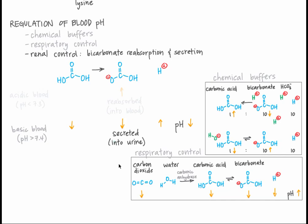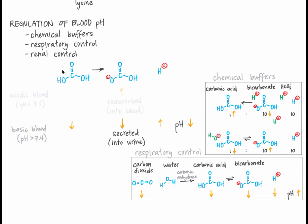As you can see, the ability of our bodies to control pH is crucial. Protein structure and function is totally dependent on pH. These three mechanisms all act to maintain pH homeostasis, and they all act on different timescales to ensure optimal physiological pH.